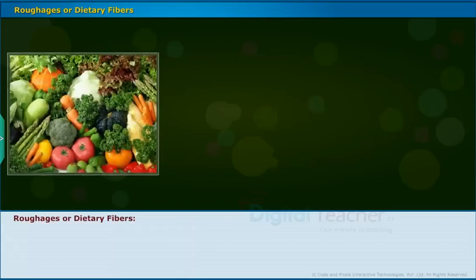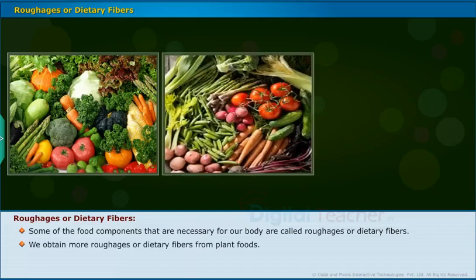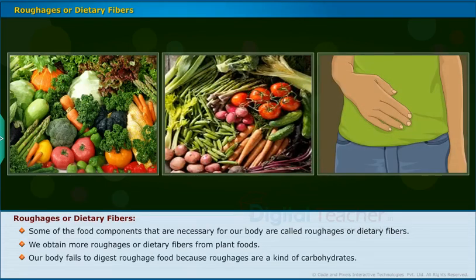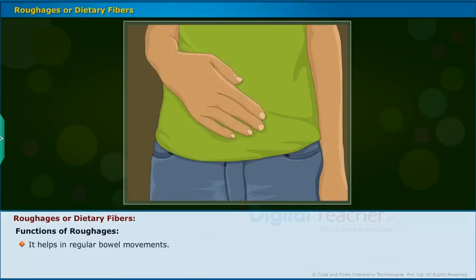Let us learn about roughages or dietary fibers. Some of the food components necessary for our body are called roughages or dietary fibers. We obtain more roughages from plant foods. Our body fails to digest roughage food because roughages are a kind of carbohydrate. Functions of roughages: they help in regular bowel movements and prevent constipation.